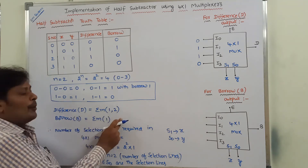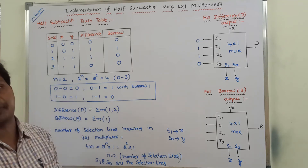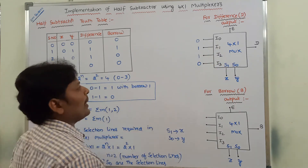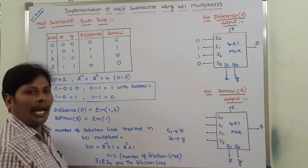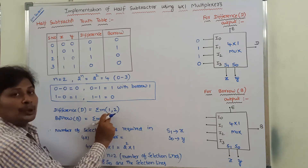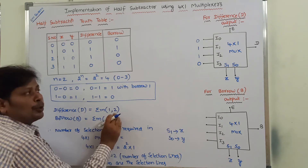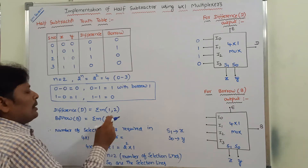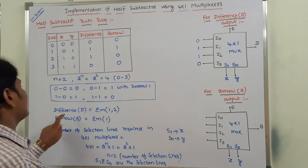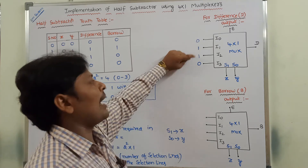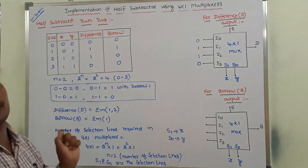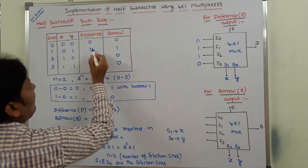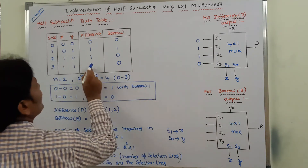Another procedure is: we simply assign 0 to I0, 1 to I1, 1 to I2, and 0 to I3 — directly taking the output values from the difference column and assigning them to I0 through I3. Whatever the output values in the difference column, those values can be directly assigned to I0 to I3.